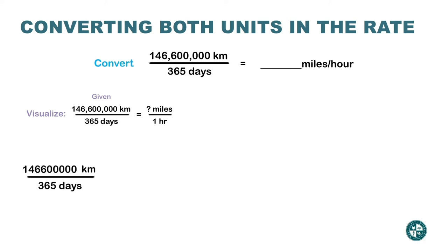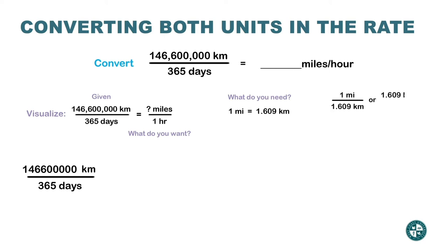This rate was given. Now I want to multiply by something — maybe more than one fraction — so that at the end I get miles over hours. The first thing I need to do is find how many miles are in a kilometer, or vice versa. I need to get rid of the kilometer on top, so I look up the conversion: one mile equals 1.609 kilometers. From that conversion statement I get two fractions. The one that cancels out the word 'kilometers' on the top is the first fraction. Now on the top I only have miles left, but on the bottom I still have days.